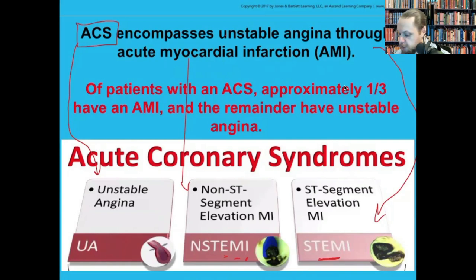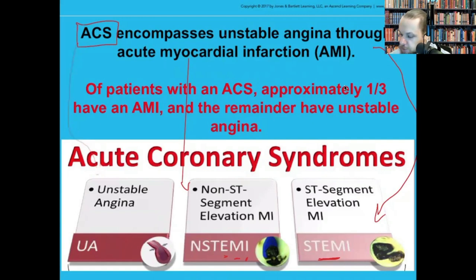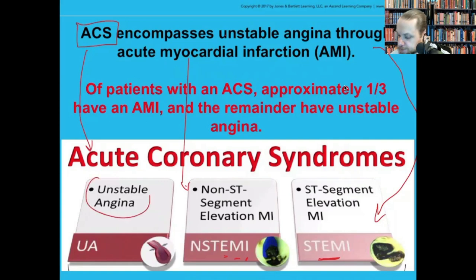With stable angina, the person usually knows roughly what type of activity will bring it on — they know that walking up three flights will cause it. Importantly, stable angina is not part of acute coronary syndromes. ACS only encompasses three things: unstable angina, non-ST segment elevation MI, and ST segment elevation MI.